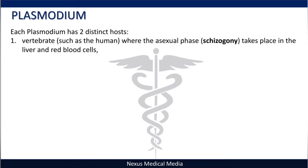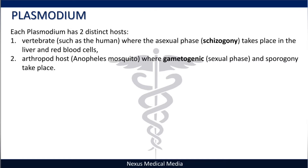Each Plasmodium has two distinct hosts. The first is a vertebrate such as a human, where asexual reproduction — also known as schizogony — takes place, specifically in the liver (hepatic phase) and red blood cells (erythrocytic phase). The second host is an arthropod, specifically the female Anopheles mosquito, where the gametogenic phase or sexual reproduction and sporogony take place.